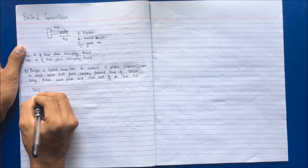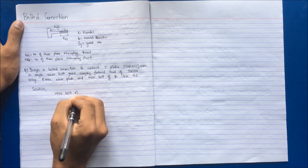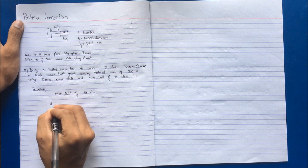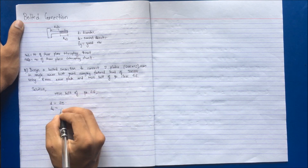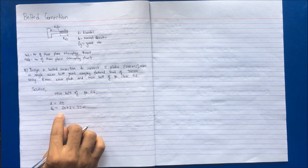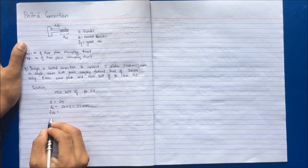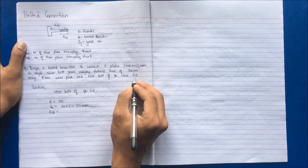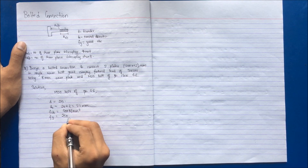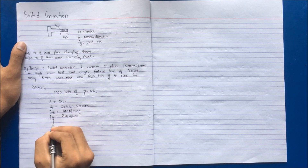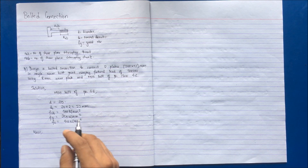From the given information — M20 bolt of property class 4.6 — the first thing we can write is: diameter of the bolt is 20mm, and the nominal diameter with fastener clearance is 20+2 = 22mm (clearance of 2mm is provided for diameters 16 to 20). The ultimate strength of the bolt, Fub, from property class 4.6 is 400 N/mm². The yield strength Fy is 250 N/mm², and Fu (ultimate strength of the plate) is 410 N/mm².